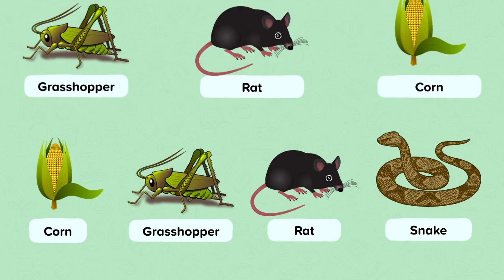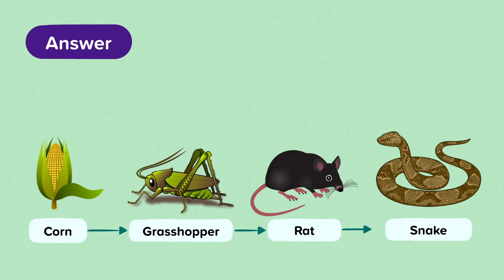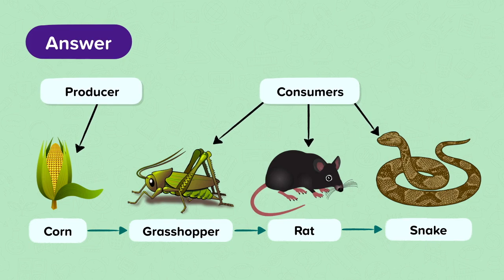Here was the answer. Remember the arrows show the direction of energy transfer. So the energy in the corn goes into the grasshopper, which goes into the rat, which goes into the snake. The corn is the producer and the grasshopper, rat, and snake are consumers.